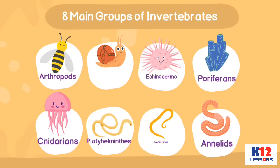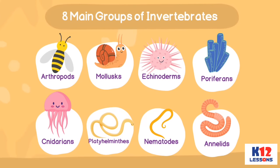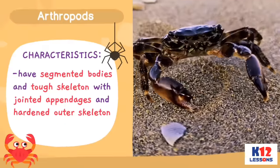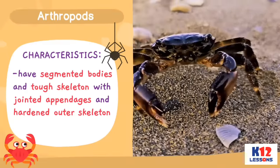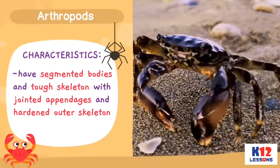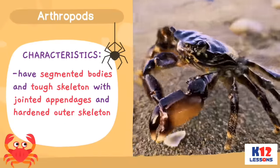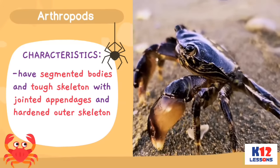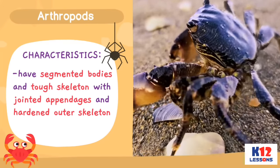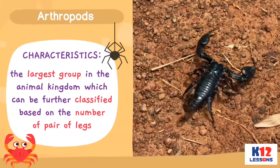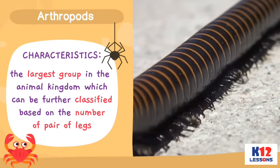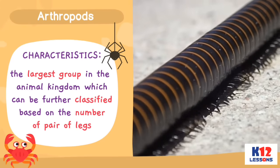The eight main groups of invertebrates. Arthropods: They have segmented bodies and a tough skeleton with jointed appendages and hardened outer skeleton. It is the largest group in the animal kingdom, which can be further classified based on the number of pairs of legs.